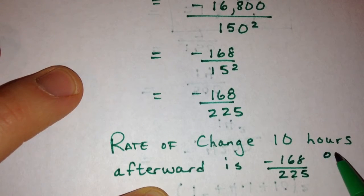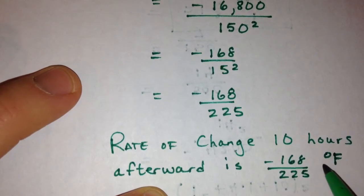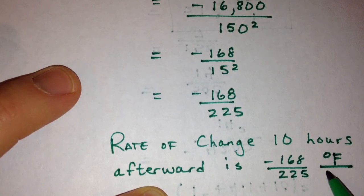And then make sure you remember your units here. It'll be degrees Fahrenheit is the temperature divided by hours is the time.